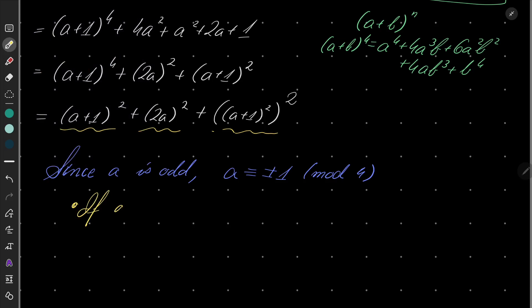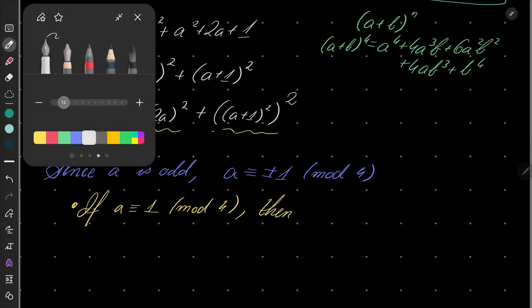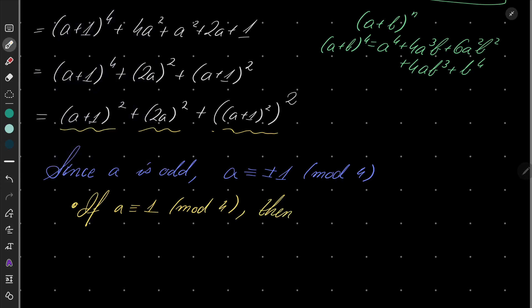If a is congruent to 1 modulo 4, then what happens? So, we can take our sum of squares. Why not? Why not use it? And we see the following. Since a is congruent to 1,